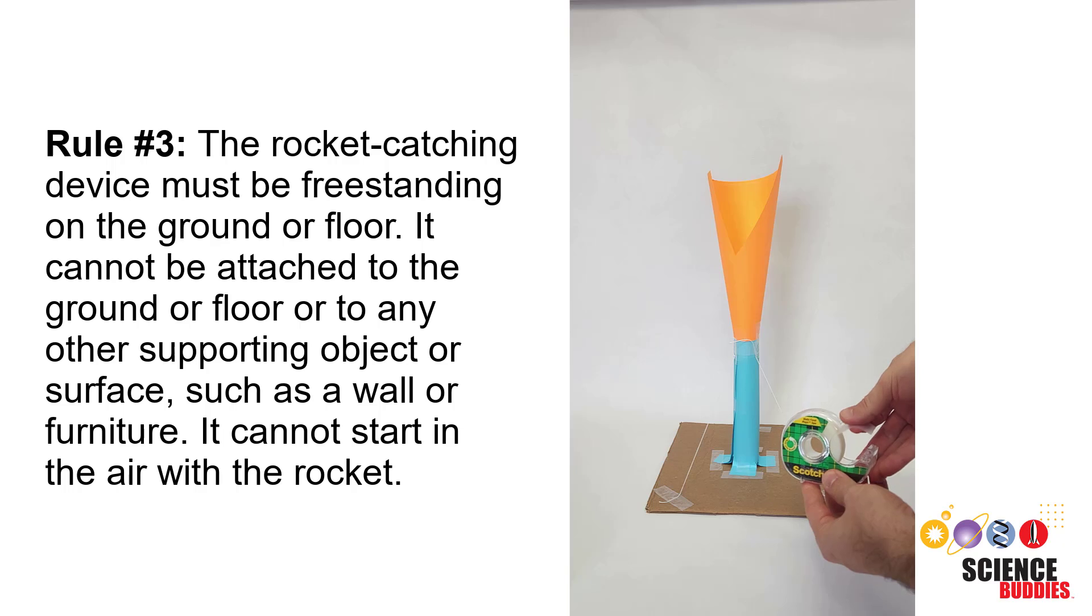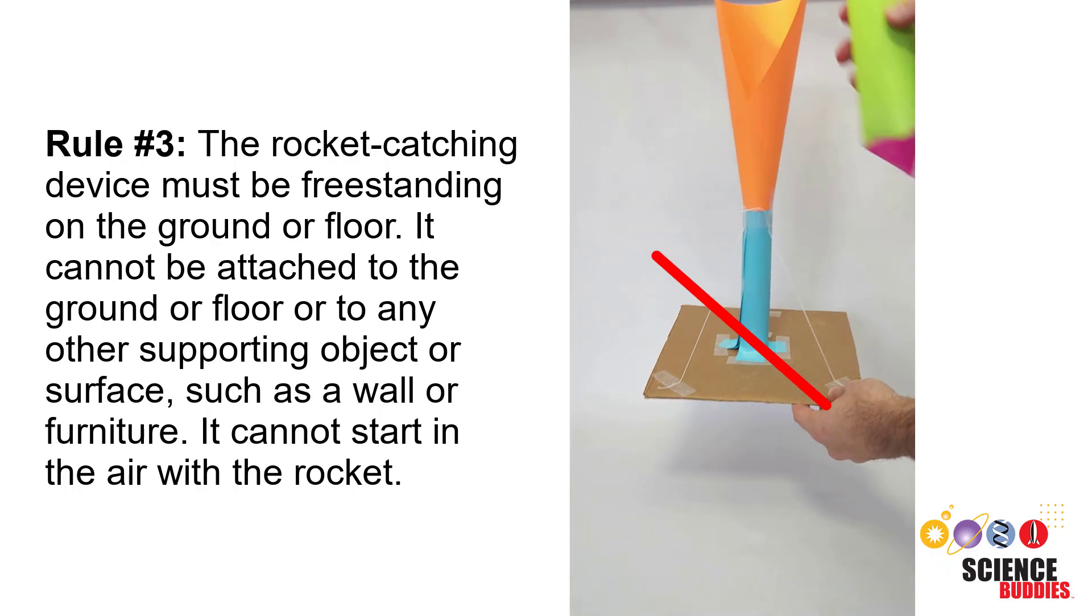Rule number three: The rocket catching device must be freestanding on the ground or floor. It cannot be attached to the ground or floor or to any other supporting object or surface such as a wall or furniture. It cannot start in the air with the rocket.